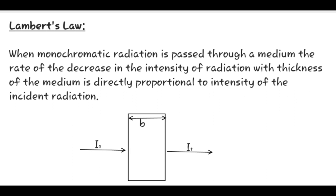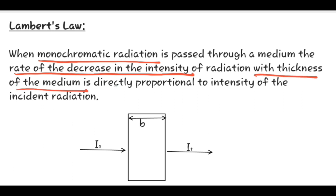Now let us study about Lambert's Law. Lambert's Law states that when monochromatic radiation is passed through a medium, the rate of decrease in the intensity of the radiation with the thickness of the medium is directly proportional to the intensity of the incident radiation. Thus, the intensity of the transmitted radiation decreases as the thickness of the absorbing medium increases arithmetically.